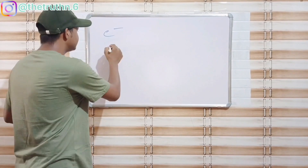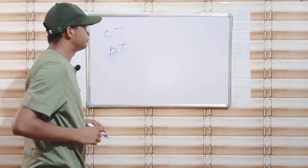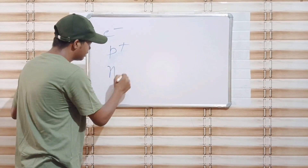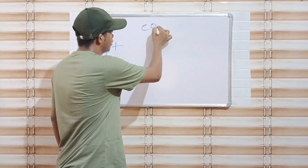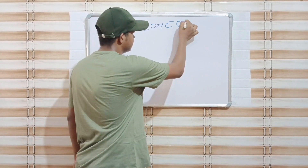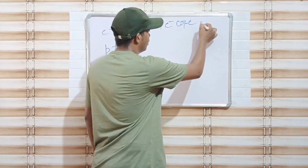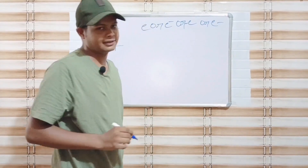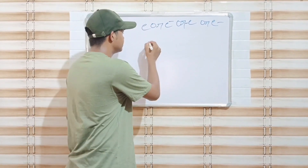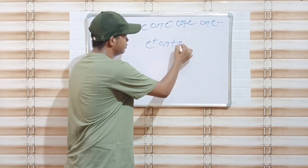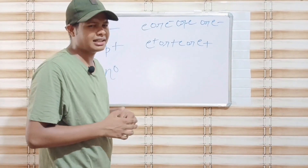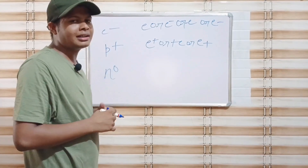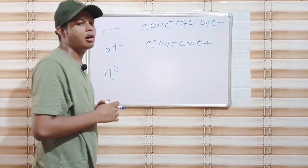The symbol to show electron is small 'e' negative. The symbol to show proton is small 'p' positive. The symbol to show neutron is small 'n' zero. Electron ka symbol small e negative, proton ka symbol small p positive, aur neutron ka symbol small n zero hai.